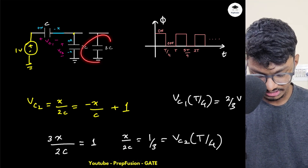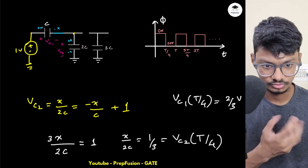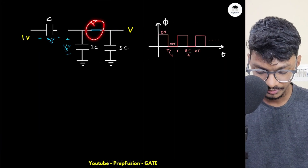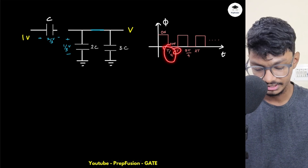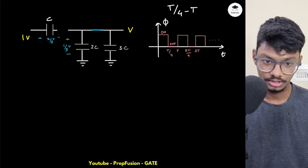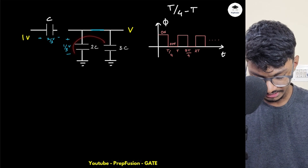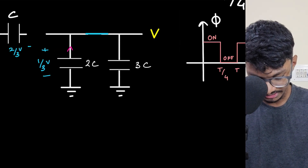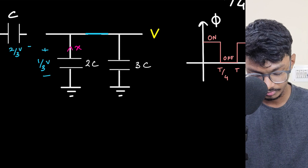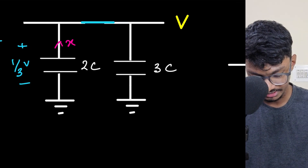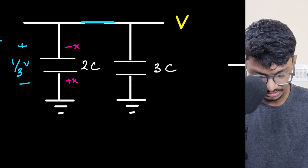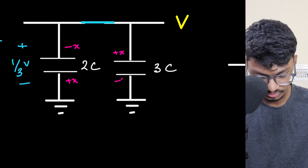VC3 is simply 0 at this point — there is no switching happening on that branch. But for the next cycle something will change. From T/4 to T, this switch is ON and the other is OFF, so charge sharing will happen again. I assume x amount of charge flows out of this capacitor, discharging it by x, while the series capacitor gains the same charge.